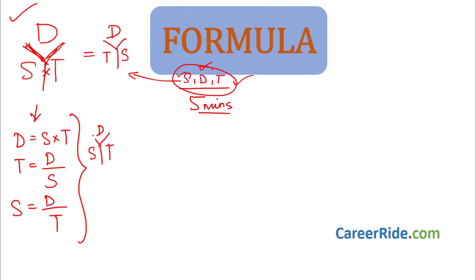Time is nothing but distance divided by speed. And speed is distance upon time. See how easily a small Y helps you remember the formulas accurately in the exam. Whenever you go to a paper, at the corner just write this Y, and whenever you have sums related to trains or boats and streams or even speed, distance, time, you can simply write this Y and get the formulas very, very easily.